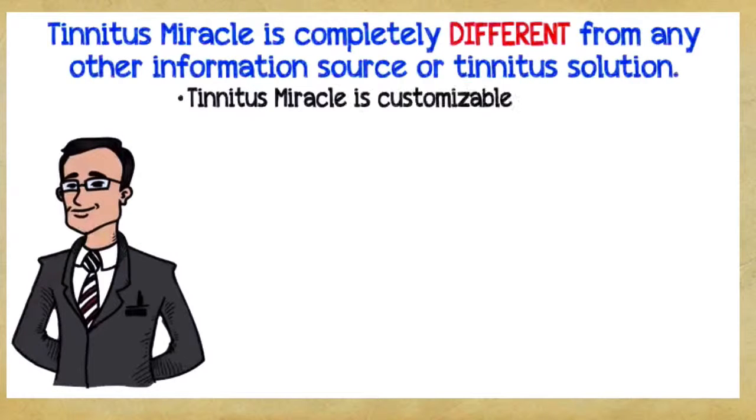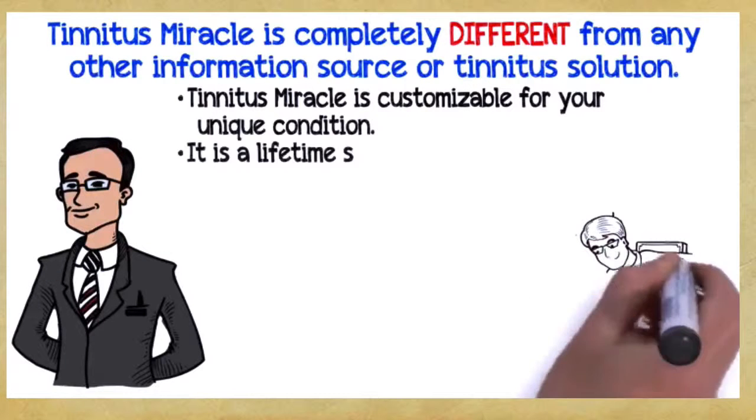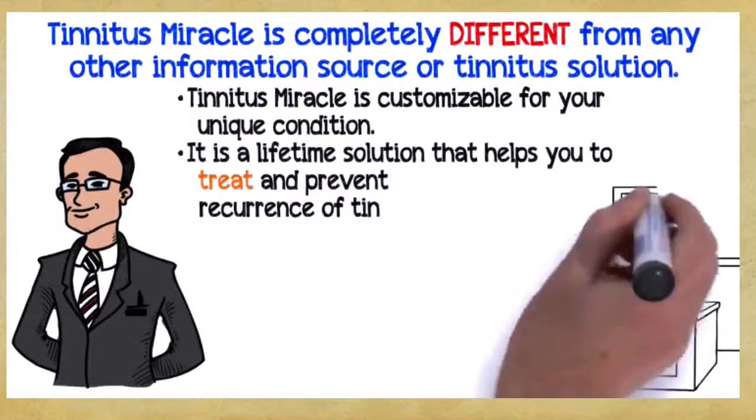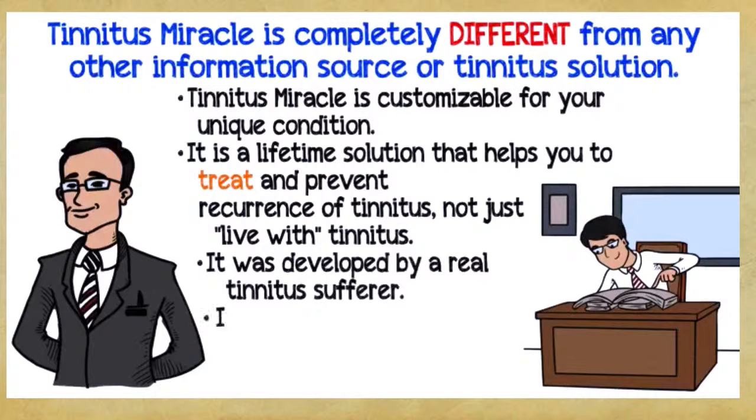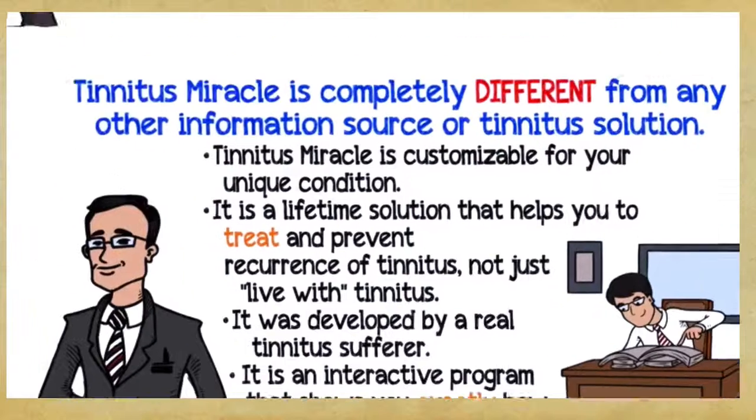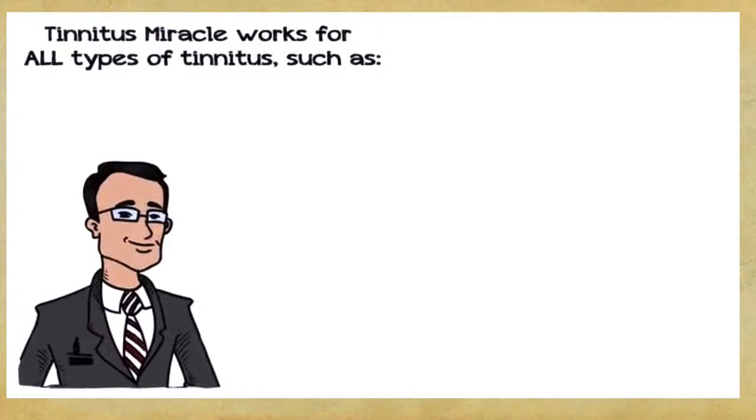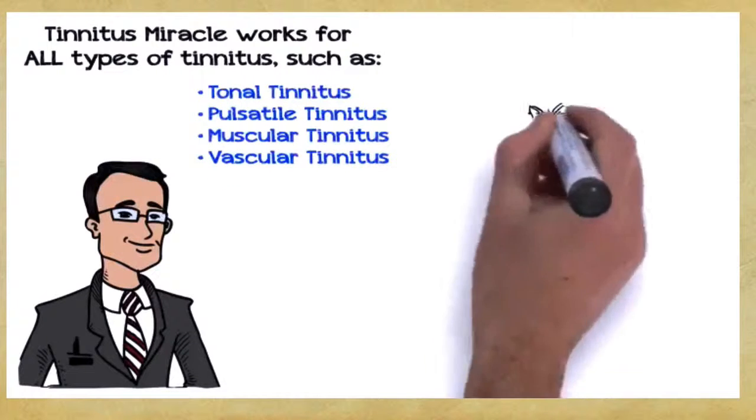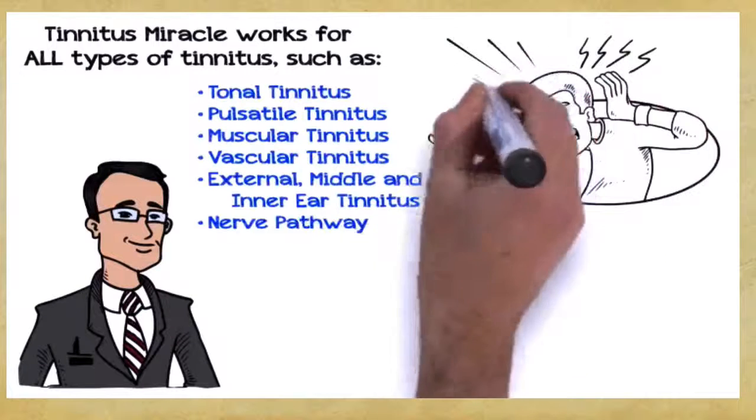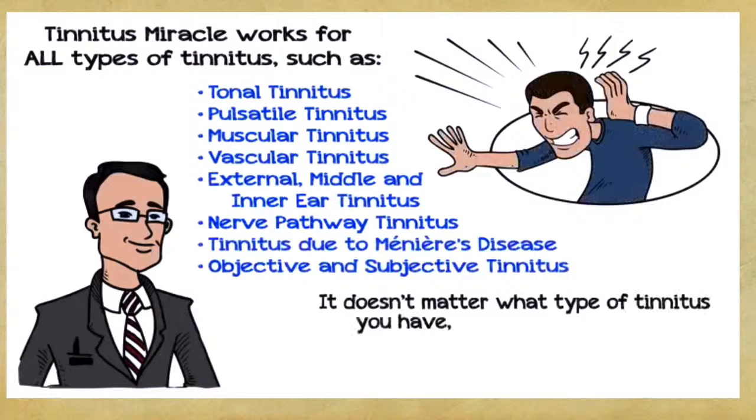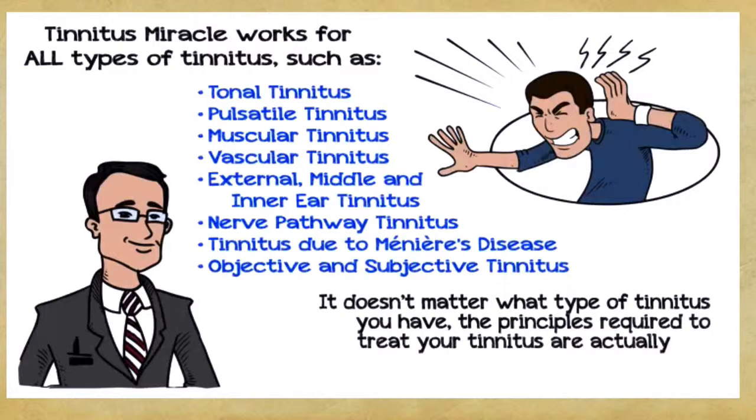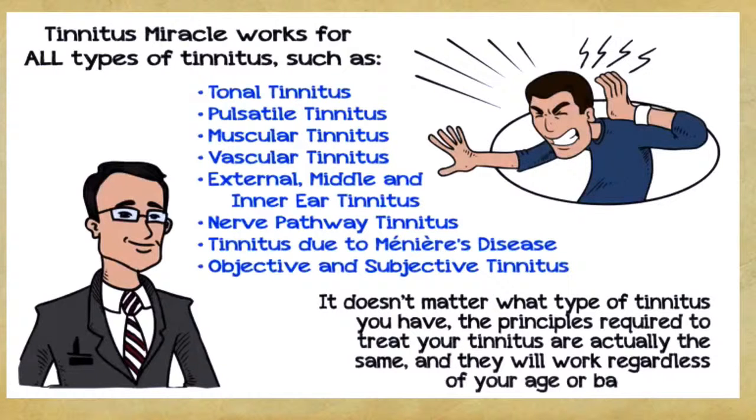Tinnitus Miracle is a sure-fire, 100% guaranteed clinically researched system that is backed by over 35,000 hours of nutritional expertise. Over 217,000 people in 163 countries have used the Tinnitus Miracle program already. Tinnitus Miracle is customizable for your unique condition. It's a lifetime solution that helps you treat and prevent recurrence of tinnitus. It was developed by a real tinnitus sufferer. It works for all types of tinnitus, such as tonal tinnitus, pulsatile tinnitus, muscular tinnitus, vascular tinnitus, external, middle, and inner ear tinnitus, nerve pathway tinnitus, tinnitus due to Meniere's disease, objective and subjective tinnitus. It doesn't matter what type of tinnitus you have, the principles required to treat your tinnitus are actually the same.